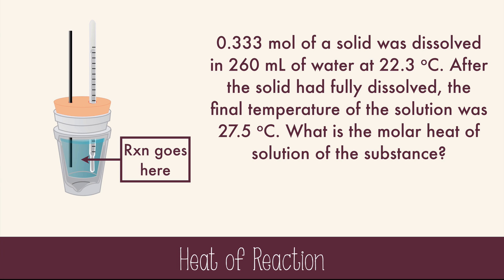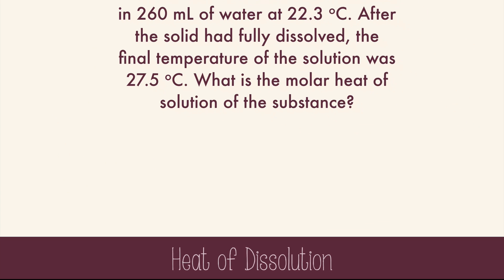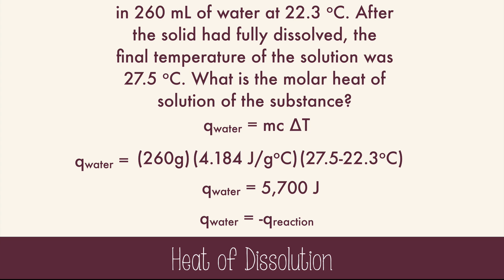We start this problem just like the unknown metal calorimetry problem. We'll calculate the Q of water first because we have all of the information for water. And because one milliliter of water is equal to one gram, we can say that there are actually 260 grams of water. The specific heat of water is 4.184 joules per gram degrees Celsius, and the final minus initial is 27.5 minus 22.3 degrees. Our total, therefore, is 5,700 joules. Now the water absorbed heat, which means the reaction gave off heat. So we'll make this a negative number for the Q of the reaction.